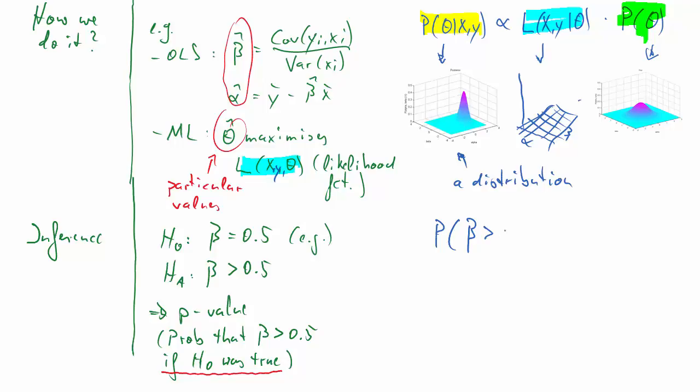Now, wouldn't we much rather just have something like what's the probability that beta is larger than 0.5, without having to make an assumption about a particular hypothesis? A Bayesian can read such a probability straight from the posterior distribution. That's very convenient. That's extremely convenient. And it makes more sense.